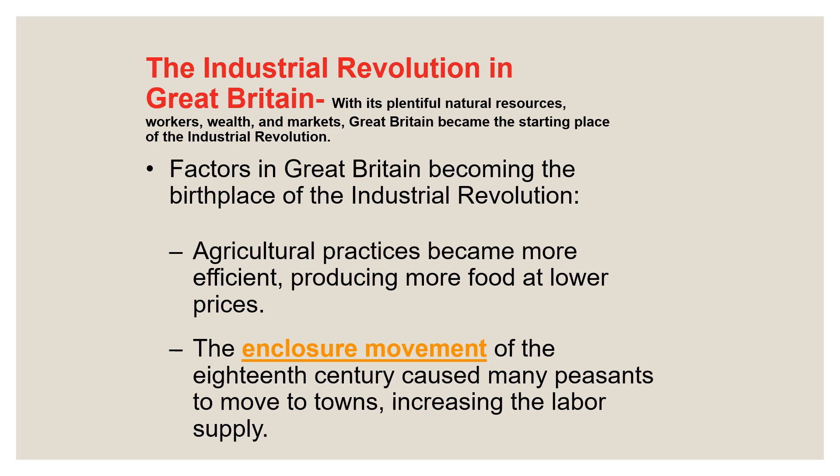Agricultural practices became more efficient through the last half of the 1700s, the 18th century, and they produced more food at lower prices. This led to more people — more food, more people — and that led to more workers that could be used in the industrial society.